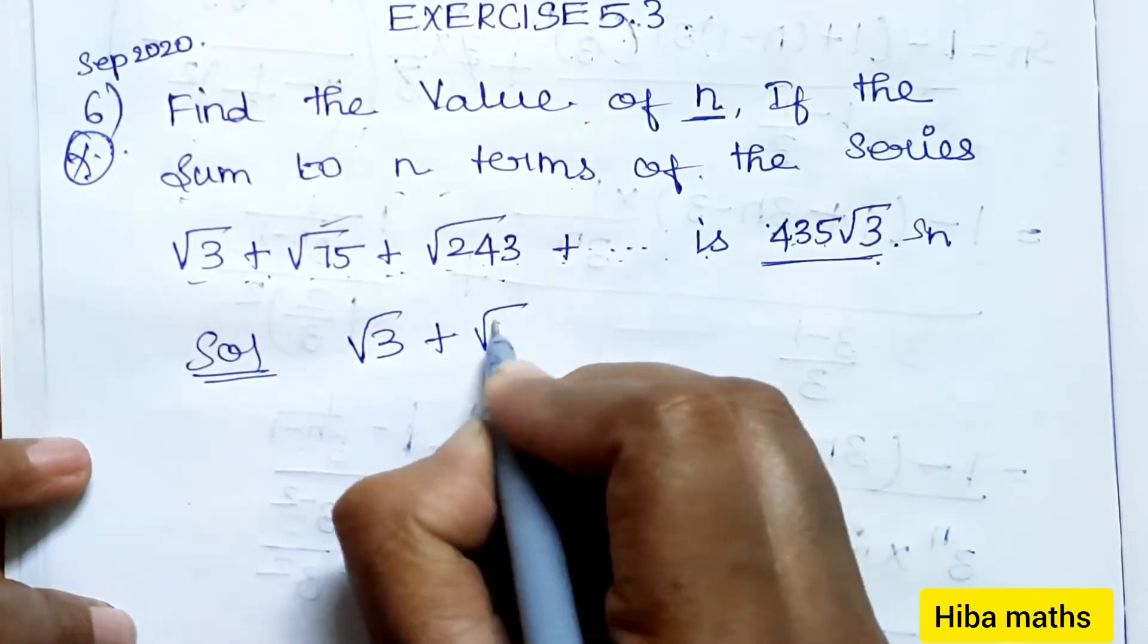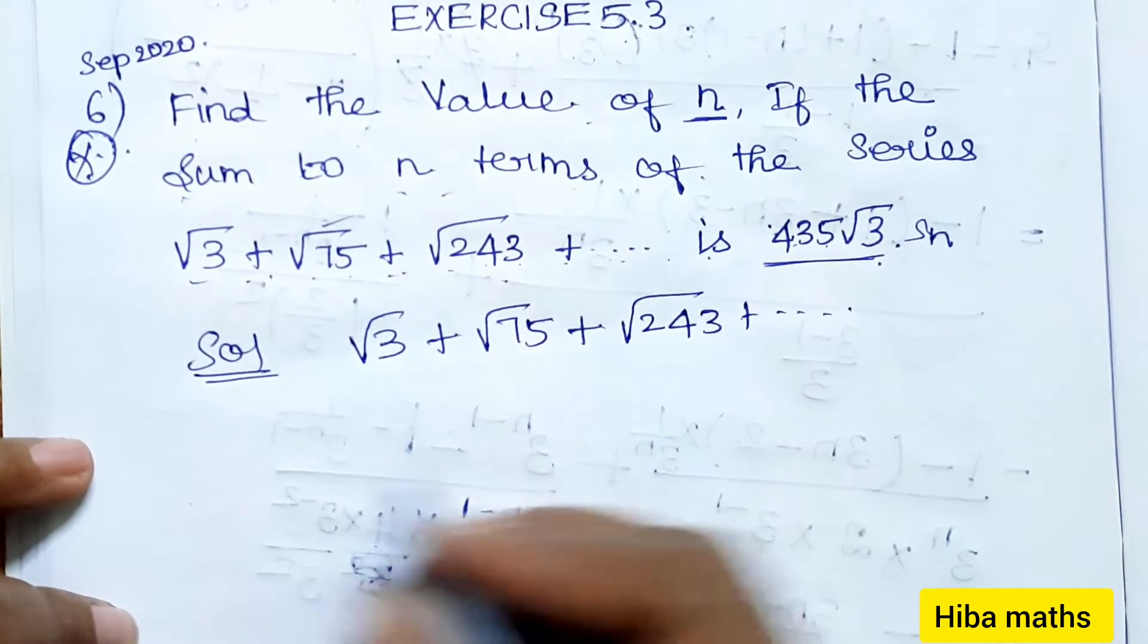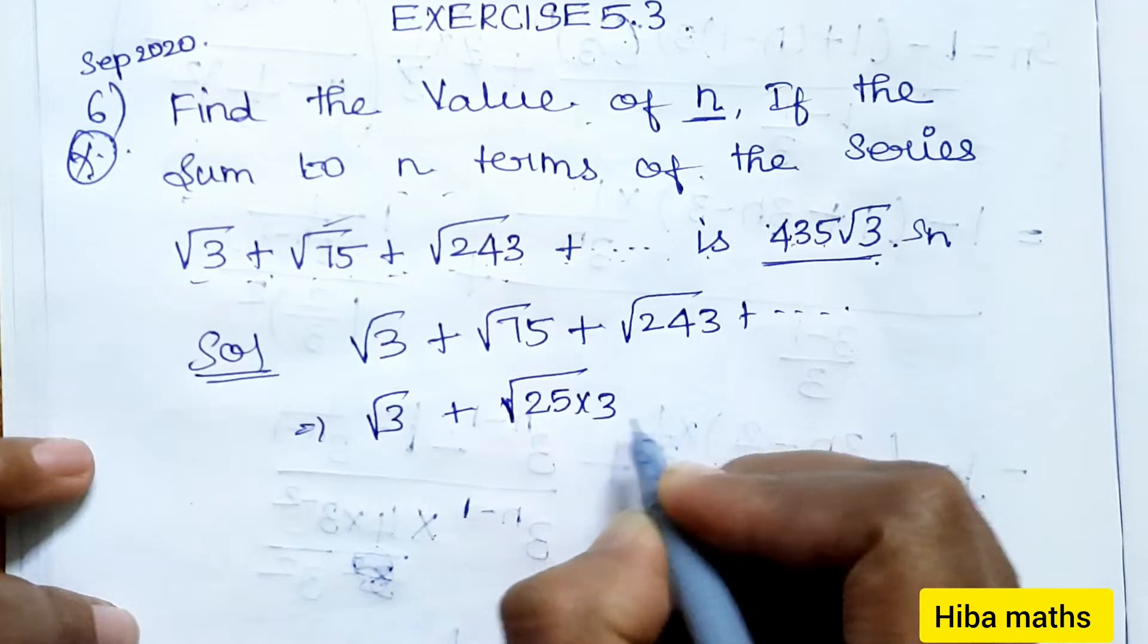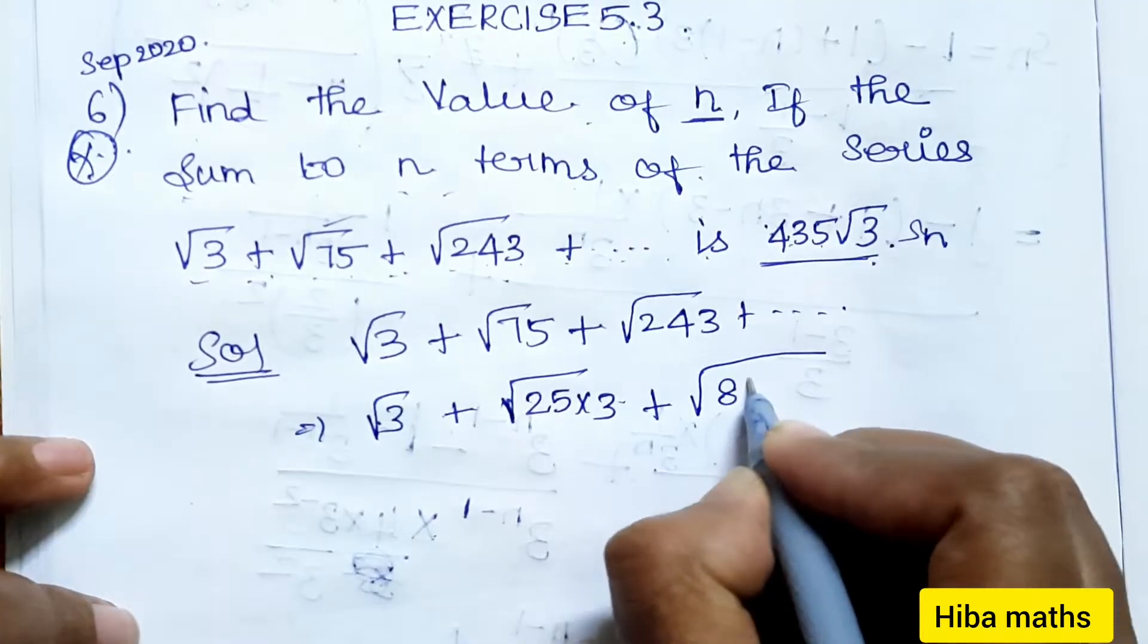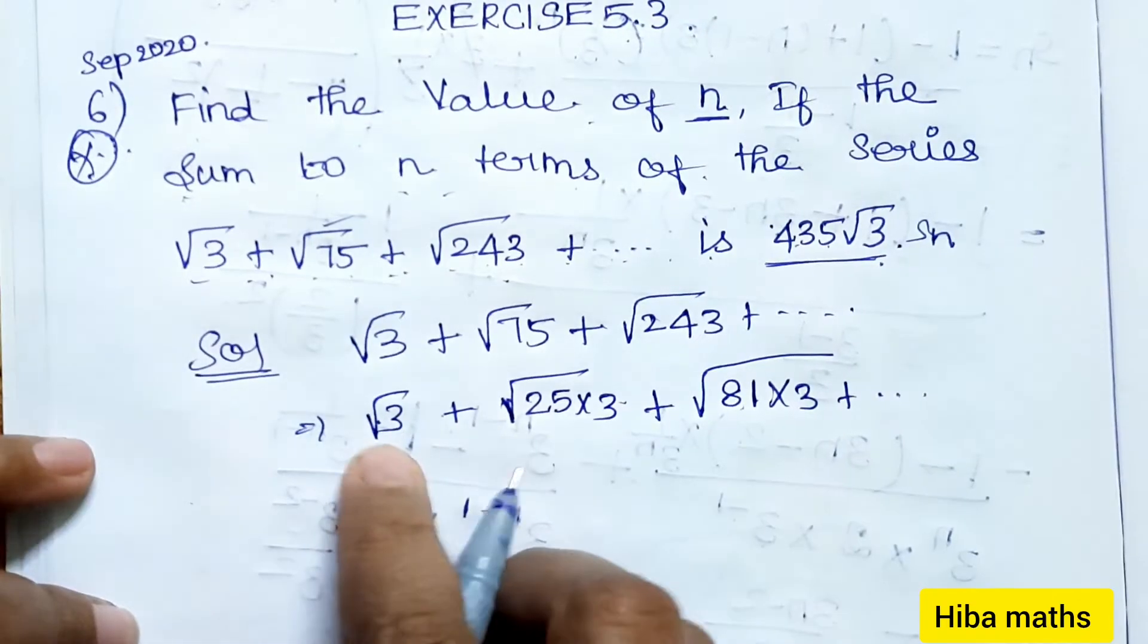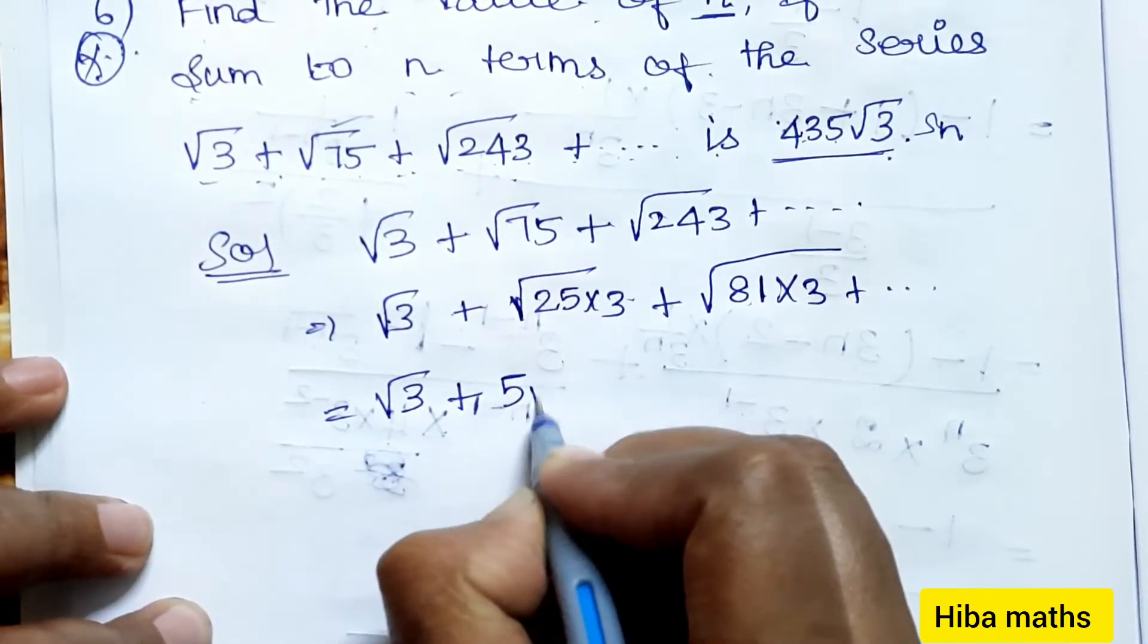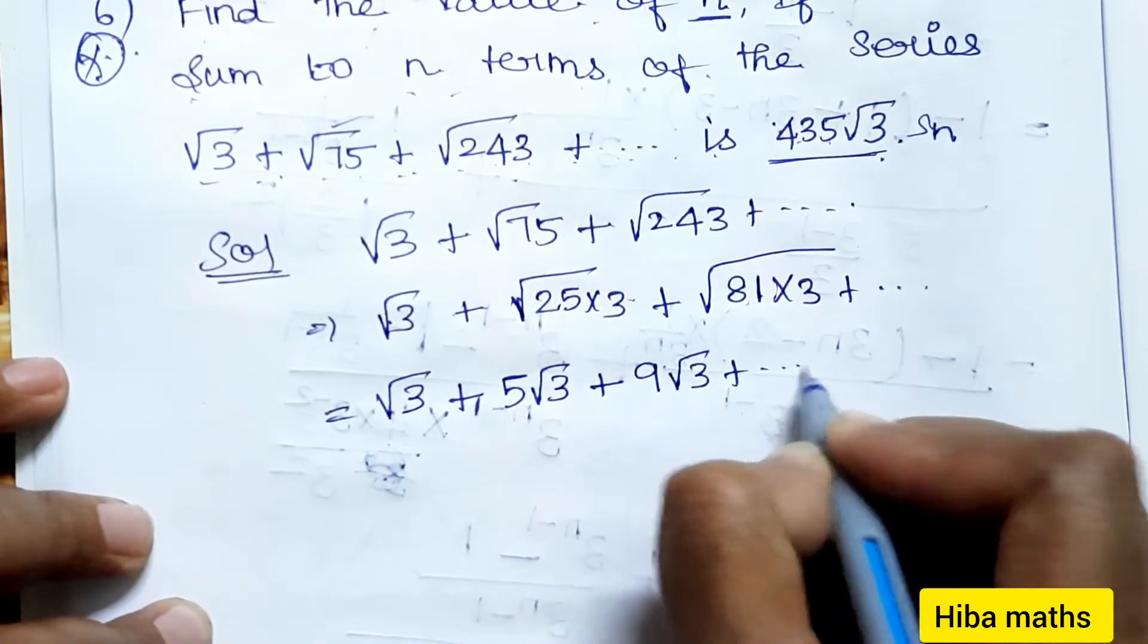The series is √3 + √75 + √243 and it goes on up to n terms. Let's simplify: √3 is √3, √75 = √(25×3) = 5√3, √243 = √(81×3) = 9√3, and it goes on. So the series becomes √3 + 5√3 + 9√3 + ...